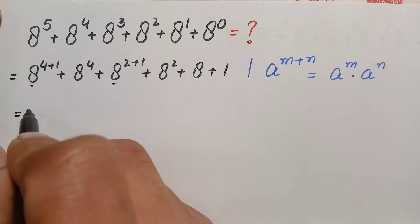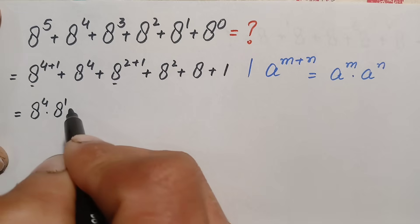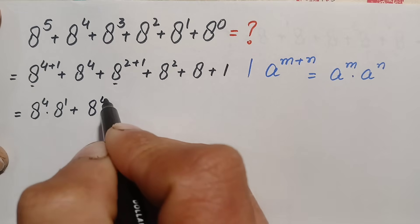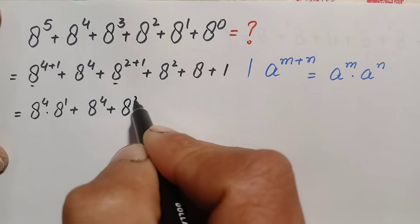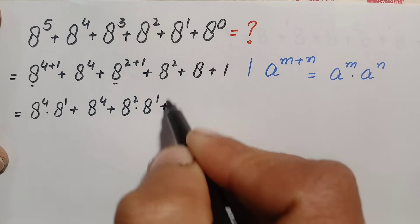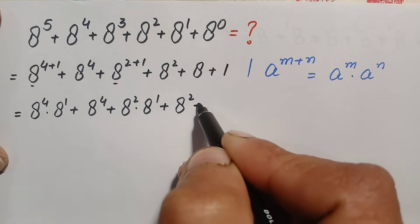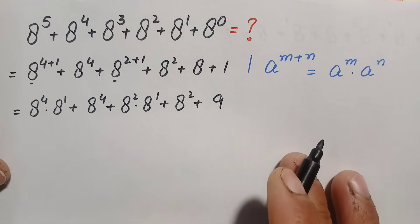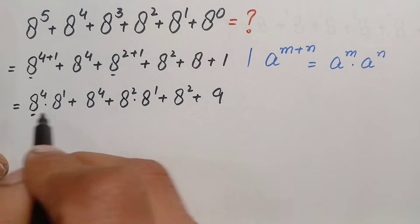...a raised to power 4 times a raised to power 1, plus a raised to power 4, plus a raised to power 2 times a raised to power 1, plus a raised to power 2, plus a plus 1. Now a plus 1 is simply 9, so we write 9 here.